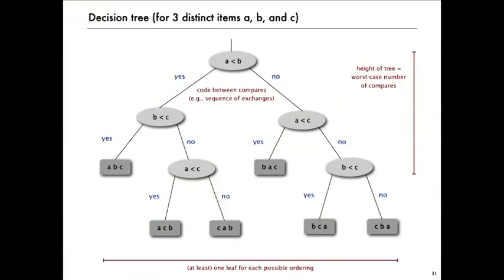And there's got to be at least one leaf for each possible ordering. If there's some ordering that is not appearing in a tree corresponding to a particular algorithm, then that algorithm can't sort. It can't tell the difference between two different orderings.